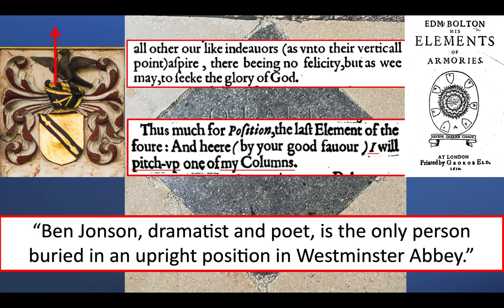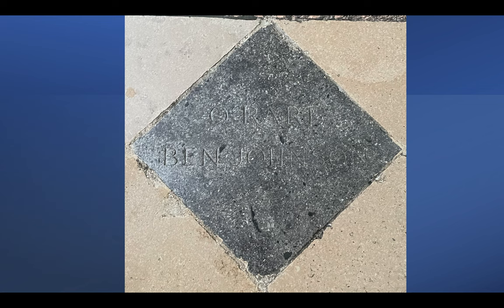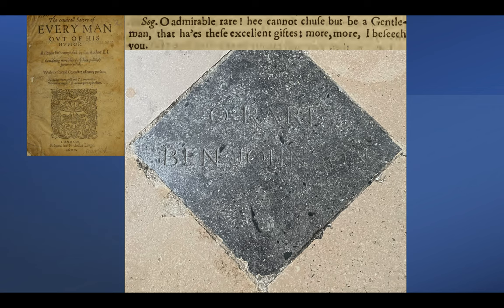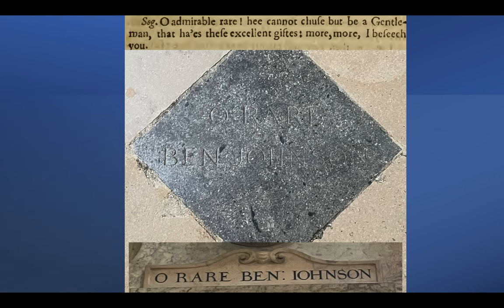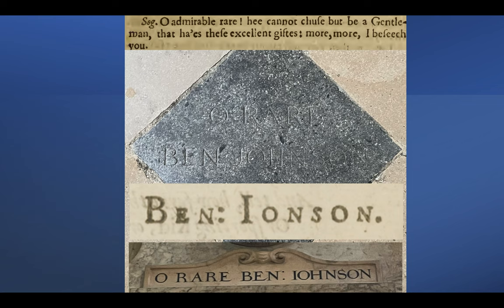Just as on Shakespeare's coat of arms the falcon holds the spear upright, the Elements of Armories tells you: 'All other are like endeavors as unto their vertical point, aspire to seek the glory of God' — pointing up, aspiring to seek the glory of God. The last thing written in the main body of the Elements of Armories before the table of hard words is: 'Thus much for position, the last element of the four. And here by your good favor I will pitch up one of my columns.' And indeed he has — he's pitched up the most natural column he possesses: his body.